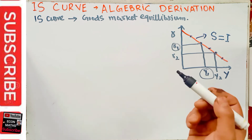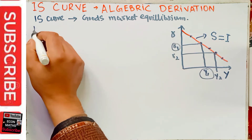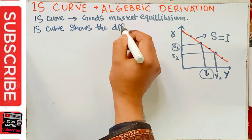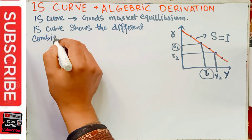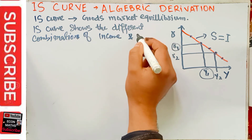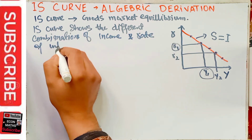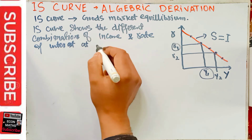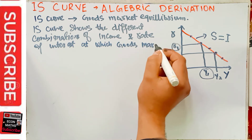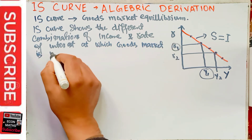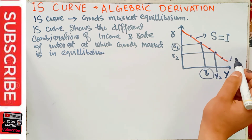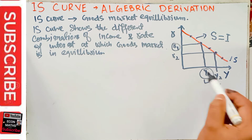On every point on the IS curve, savings is equal to investment, because IS stands for Investment and Savings. The IS curve shows the different combinations of income and rate of interest at which the goods market or product market is in equilibrium.